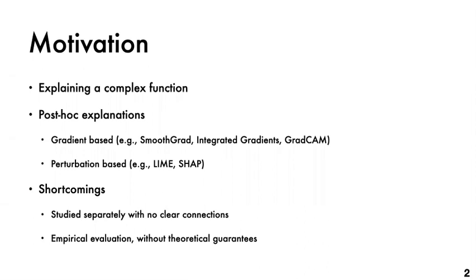Post hoc explanation techniques provide these explanations for different decision points. Two broad categories of post hoc explanation techniques are gradient-based techniques like SmoothGrad or Integrated Gradients, or perturbation-based techniques such as LIME or SHAP. These two classes are primarily studied separately in previous work. In addition, most of the research so far has only focused on empirical evaluation without really any theoretical analysis. In this work, our aim is to establish connections between these two classes of post hoc explanations as well as understand some of their theoretical properties. In particular, we focus on SmoothGrad from the gradient-based family and LIME from the perturbation-based family.